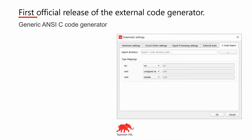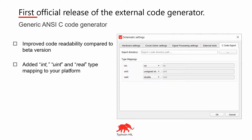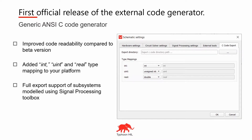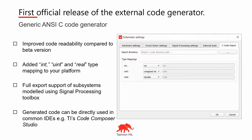Furthermore, the C code export settings menu was also improved. The user can define in the schematic settings the desired export directory for the generated C code. The improved readability helps the user to better understand and debug the exported C code. Internal types such as integer, unsigned integer, and real can be directly mapped to your platform. All subsystems modeled using the signal processing toolbox can be fully exported via this new feature. Yes, the generated C code can be directly used in common IDEs such as Texas Instruments Code Composer Studio, for instance.